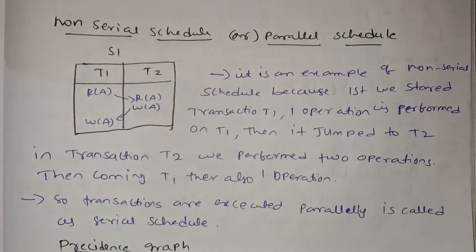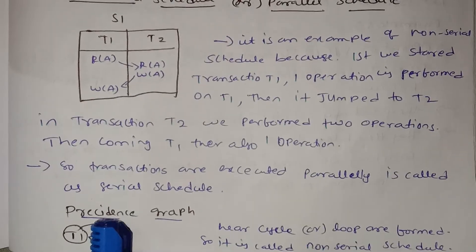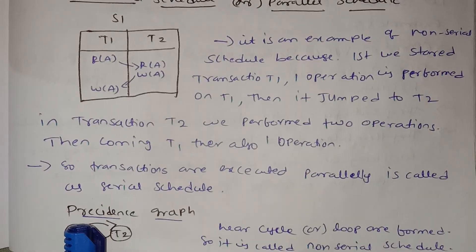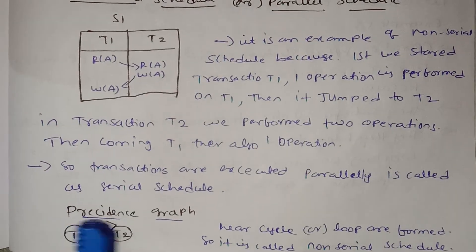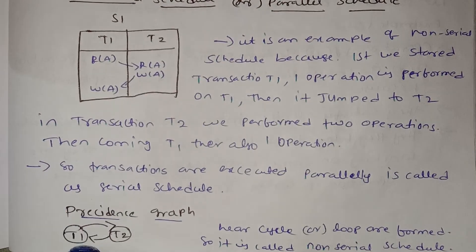Now we look at the Precedence Graph for this Non-Serial Schedule. The Precedence Graph is drawn for T1 and T2.